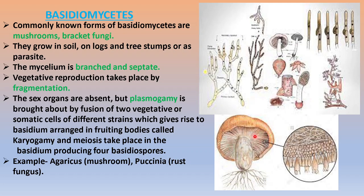Here you can see the fruiting body or basidiocarp. Underneath, if you look at the foldings, you will see the hyphae as well as the basidiospores. Each basidium has four spores because each underwent one meiotic division, resulting in four haploid spores. When shed off, they give rise to new hyphae which are branched and septate. In Basidiomycetes, asexual mode of reproduction is not seen — they reproduce through vegetative or sexual mode only.